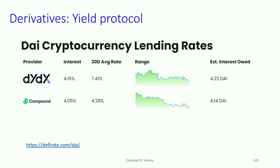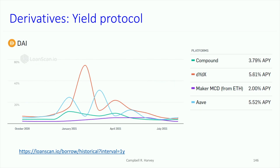Here are some examples of interest rates. For DYDX, you can see the average interest rate, the 30-day average, and the range. If we go to a longer horizon, showing Compound, DYDX, Maker, and Aave, you can see very significant variation in these borrowing rates. It makes sense that there's a market for this.